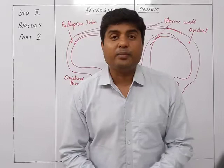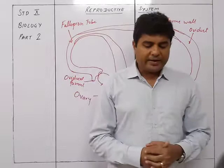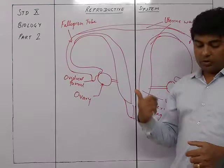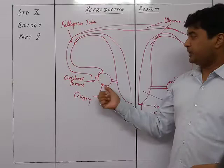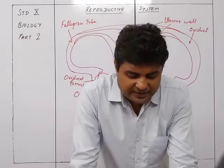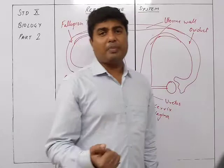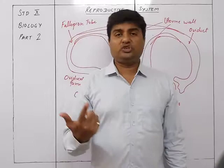The two ovaries are small ovoid — oval-shaped — bodies. Their peripheral part produces ova or eggs. Normally one egg matures in each ovary every alternate month, so each ovary alternates. For example, in January an egg matures from one ovary, and in February from the other.